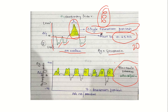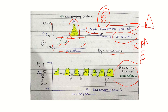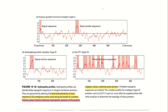Bacteriorhodopsin gives us seven peaks, making it a seven-transmembrane protein. Important note: we also see small peaks in the graph, but we do not count them as transmembrane segments because they do not contain at least 20 continuous amino acids. Only segments with 20 or more amino acids can form a helix. If a peak corresponds to only 2 or 3 amino acids, it cannot be a helical transmembrane segment.